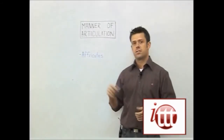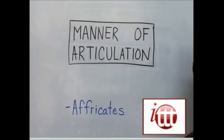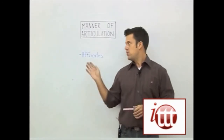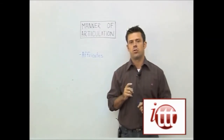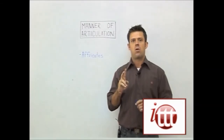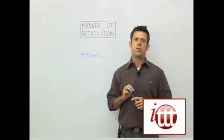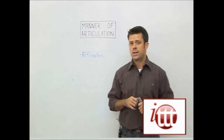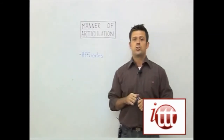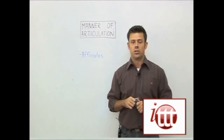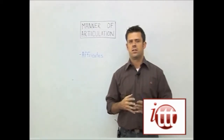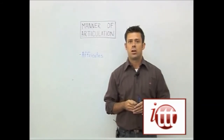Next we have our affricates. This manner of articulation is very close to the plosives. However, there's one very important difference — in the last step. With affricates, we have a closure in the vocal tract and a buildup of air, but we have a gradual release of air, rather than the sudden release of the plosives. There are two examples: CH and J.